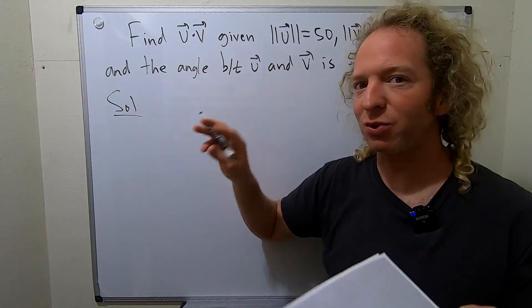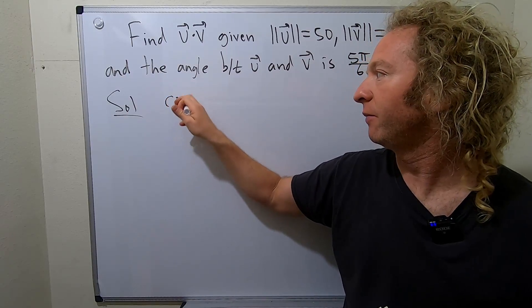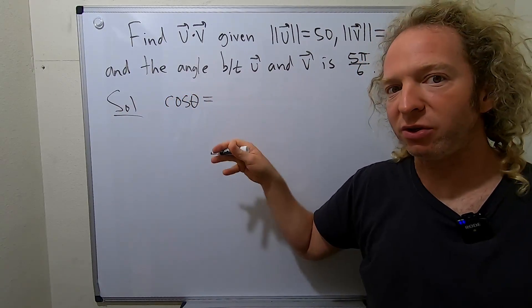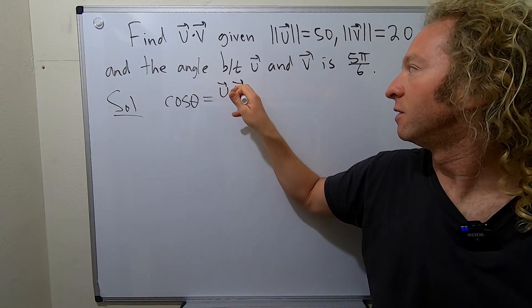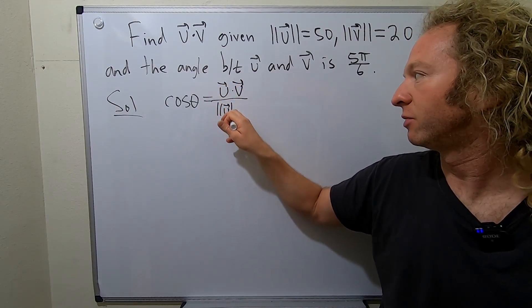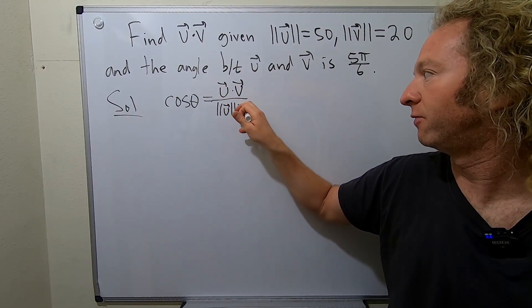So recall that the cosine of theta, where theta is the angle between u and v, is equal to u dot v divided by the magnitude of u, those are my arrows, terrible handwriting, magnitude of v.